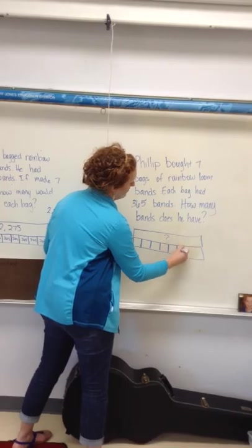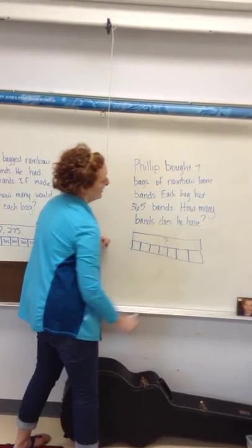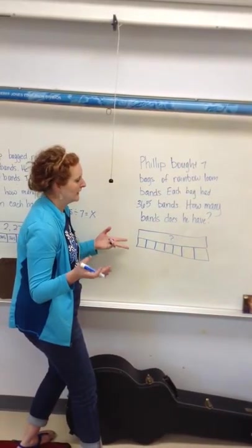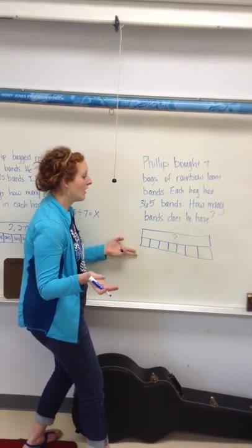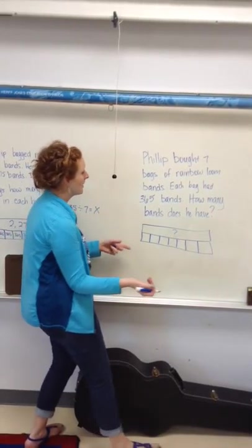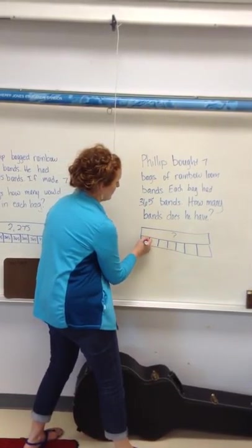Two, three, four, five, six, seven. Ideally, they would be identical in length, but it's okay if they're not, as long as we have the general picture. And we know each one has 365.